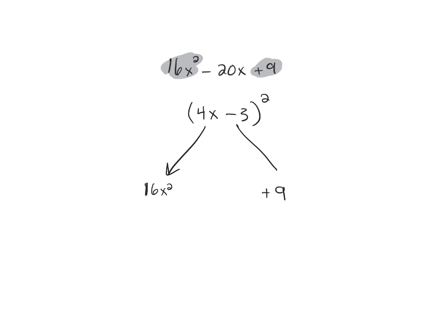But look what happens. The middle here, if I multiply those, I get negative 12x. So this should actually be minus 24x. But what I have up here is a minus 20x. So this does not work for that one.